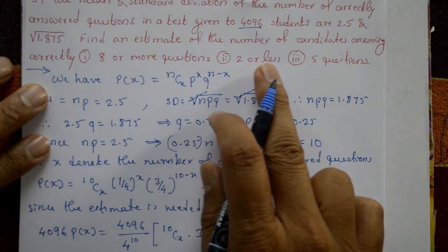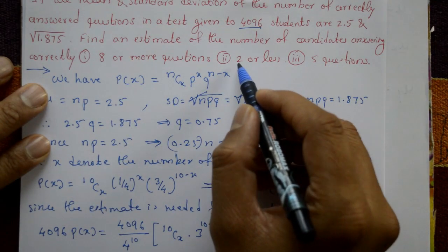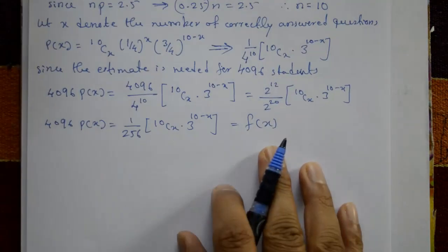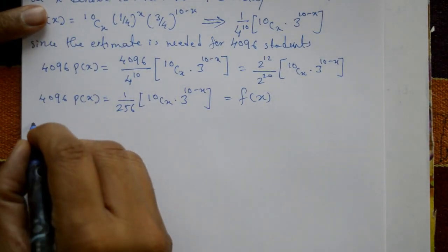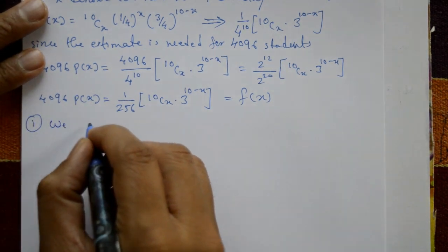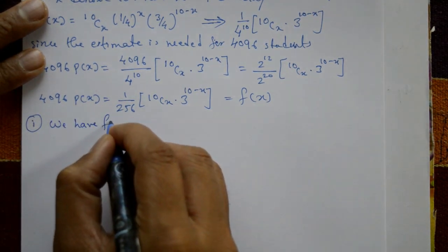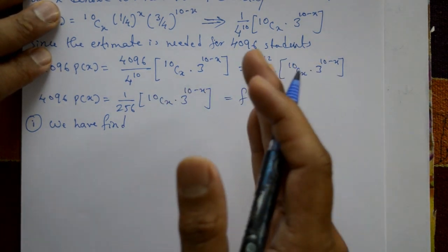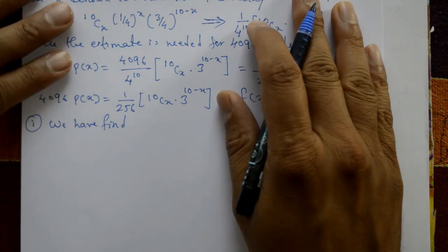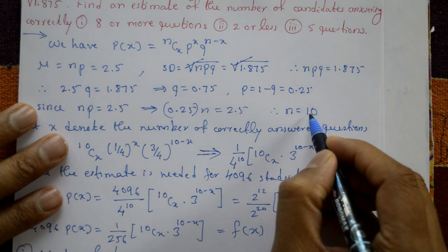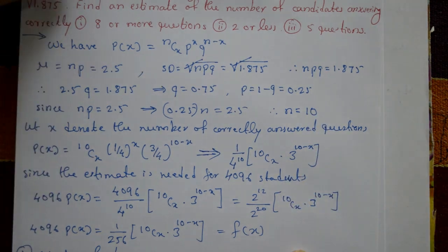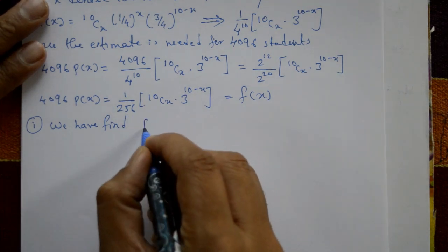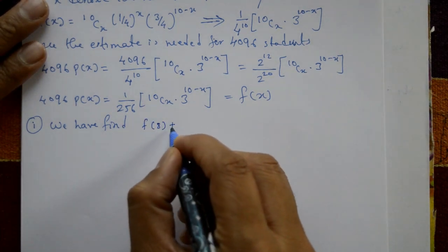Now solving case-wise. Case 1: eight or more questions means X = 8, 9, or 10 are possible (since n = 10). We calculate f(8) + f(9) + f(10).